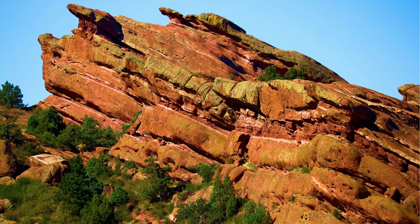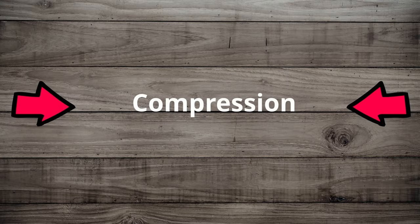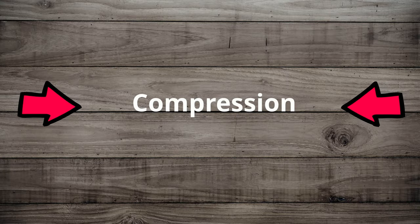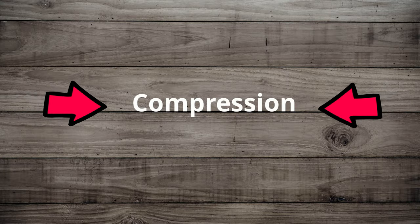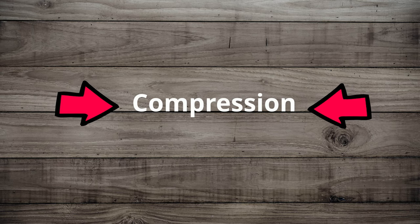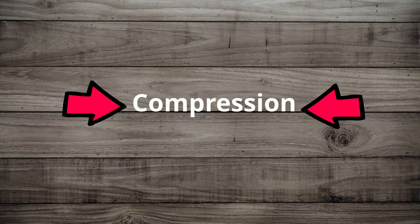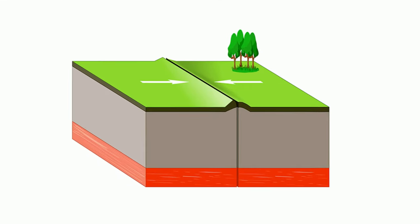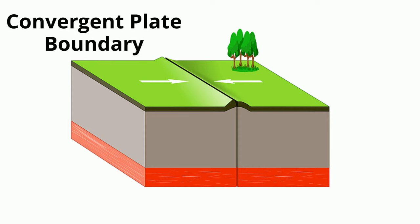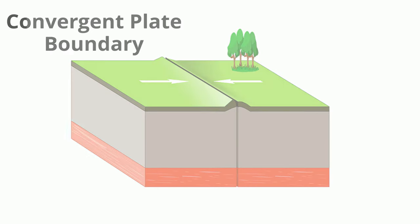The type of stress that occurs when an object is squeezed, like when two plates collide, is called compression. When compression occurs at a convergent boundary, mountains may form. Check out this simple graham cracker example.